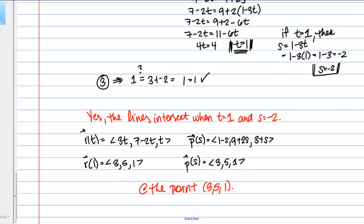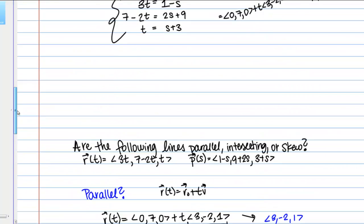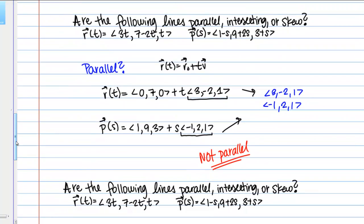Now often we think of the parameters of these vector valued equations as time which is a good way to think about it. So if you're thinking about it in that way then these lines intersect but not necessarily at the same time. But anyway so these lines do intersect so that is the answer to this question. They're not skew, they're not parallel, but they are intersecting.